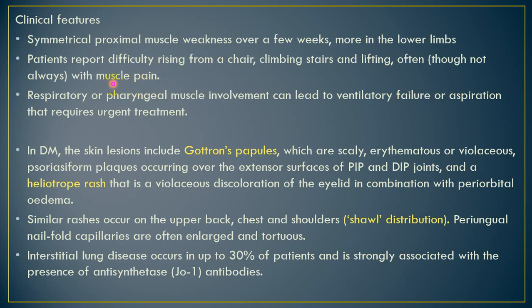If the disease involves muscles other than skeletal muscle, the most commonly involved are the pharyngeal muscles, resulting in dysphagia and frequent aspiration with pneumonia. If it involves respiratory muscles, the patient may present with respiratory failure and need for respiratory support.